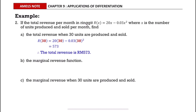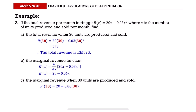The marginal revenue function is the differentiation of the revenue function. The marginal revenue when 30 units are produced and sold is obtained by substituting 30 into the marginal revenue function, and this equals 18.2. So the marginal revenue is RM 18.20.